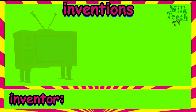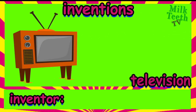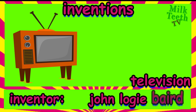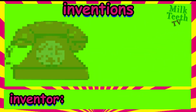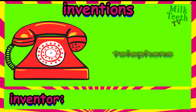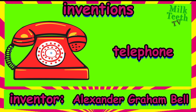This is a television, or a TV. It was invented by John Logie Baird. From an old-fashioned TV, it has evolved to become what we see today. This is a telephone. It was invented by Alexander Graham Bell.